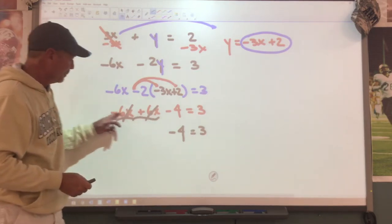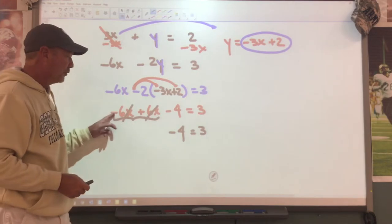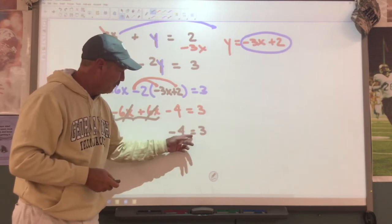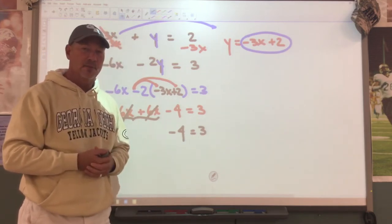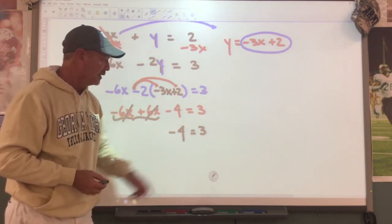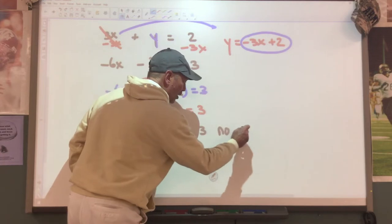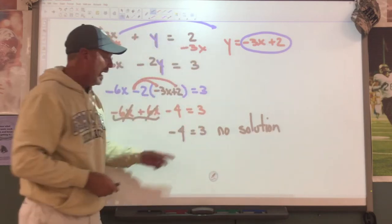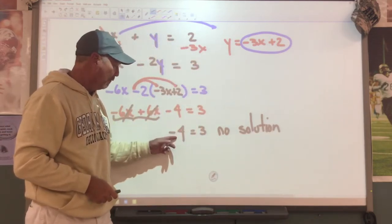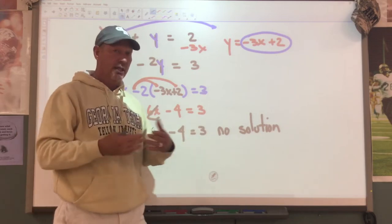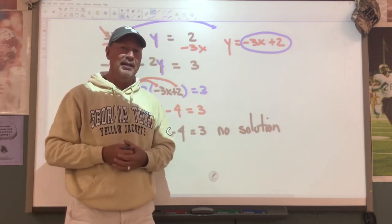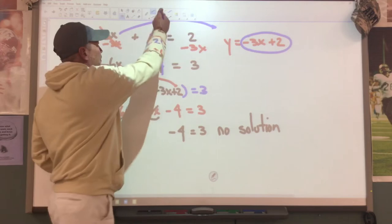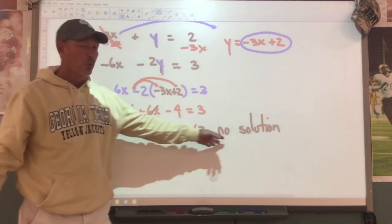When your variables cancel each other out, you're left with two choices. I have negative 4 equals 3 - is this a true statement? This is not a true statement, so I'm going to ask you to write no solution. Had this been a true statement like negative 4 equals negative 4, I would ask you to write infinite solutions. But in this case, not a true statement - write no solution.